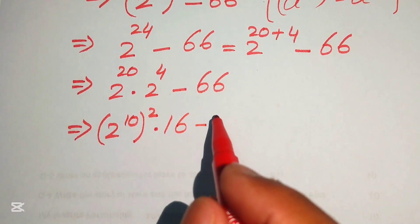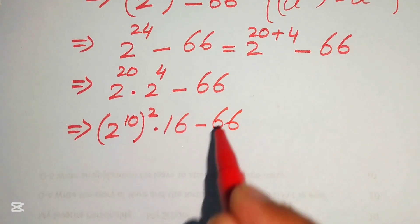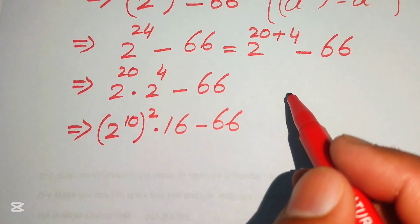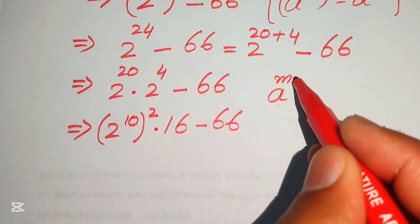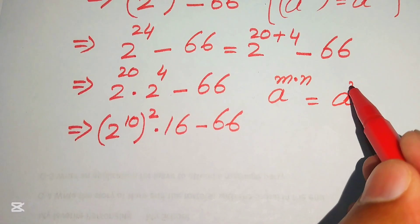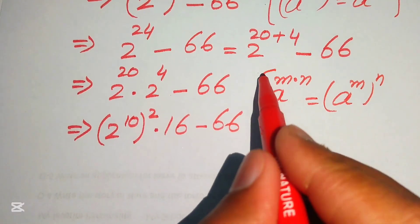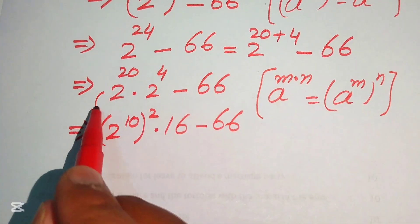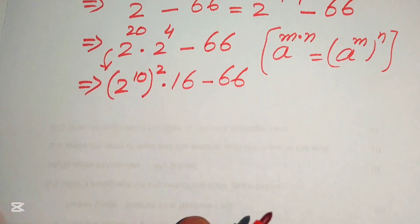We apply the exponent law: if you have a to the power of m multiplied by n, you can write it as a to the power of m, to the power of n. According to this rule we can rewrite that term accordingly.